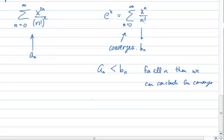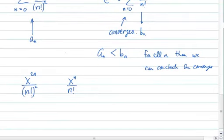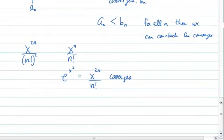So let's try it. So we look at x to the 2n over n factorial squared. And we compare that to x to the n over n factorial. Well, we know that if I consider e to the x squared, that would be x to the 2n over n factorial. And I know that this converges. So then I just simply say, well, x to the 2n over n factorial, which is the e to the x squared. We know this one converges for all x.